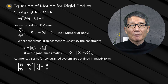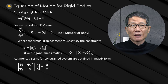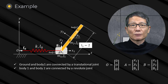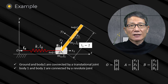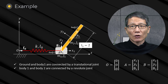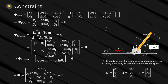Using the Lagrangian multiplier method, the augmented equations of motion with constraints are formed. As an example, consider a system of two bodies: the first body is connected to the ground by a spring and a translational joint, and the first and second bodies are connected by a revolute joint. The generalized coordinates and constraints are formulated by the proposed method.